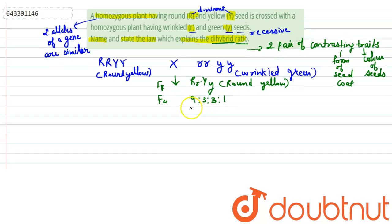9 are round yellow, 3 are wrinkled yellow, so that is small r, capital Y. 3 are round green, so capital R and small y. 1 is wrinkled green, that will be able to express when they are small r, small y.